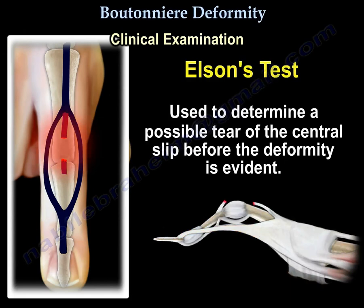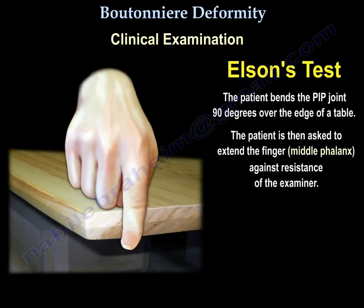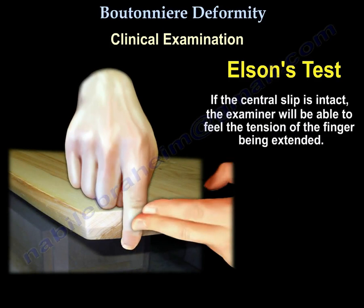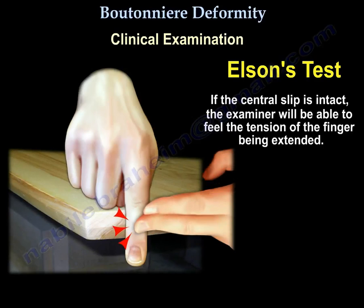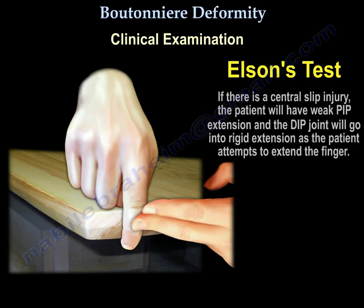Elson's test is used to determine a possible tear of the central slip before the deformity is evident. The patient bends the PIP joint 90 degrees over the edge of a table and is then asked to extend the finger against resistance from the examiner. If the central slip is intact, the examiner will feel tension as the finger is extended. With a ruptured central slip, the examiner will not feel tension and the patient will be unable to extend the PIP joint. If there is a central slip injury, the patient will have weak PIP extension and the DIP joint will go into rigid extension as the patient attempts to extend the finger.